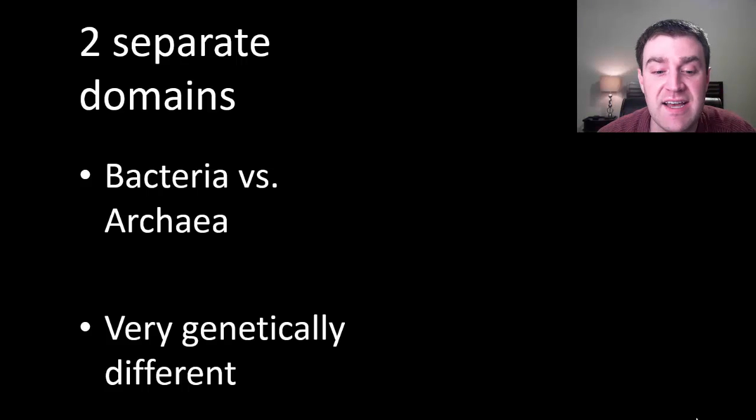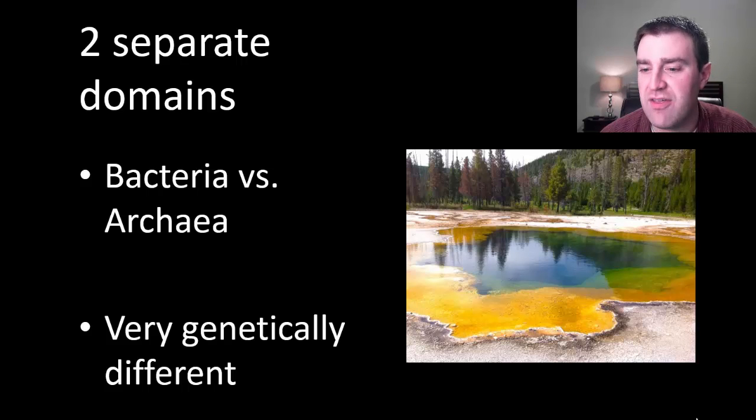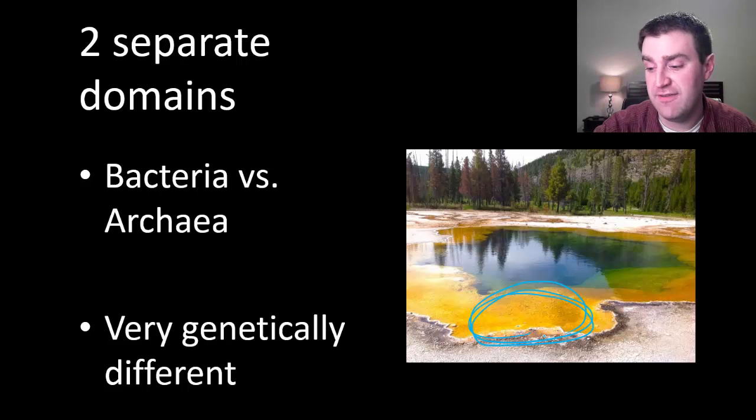And one other thing I'll just briefly say about archaea is we used to think that they only lived in very extreme places. So this is a very pretty picture of a hot spring in Yellowstone National Park. And it's actually species of archaea that kind of give the hot springs their color like this. So there are still archaea that live in kind of weird extreme places like this very hot hot spring. But as it turns out, we found that archaea live in fairly normal places too. So they can be found in extreme places, but not only those places like a textbook might still say.